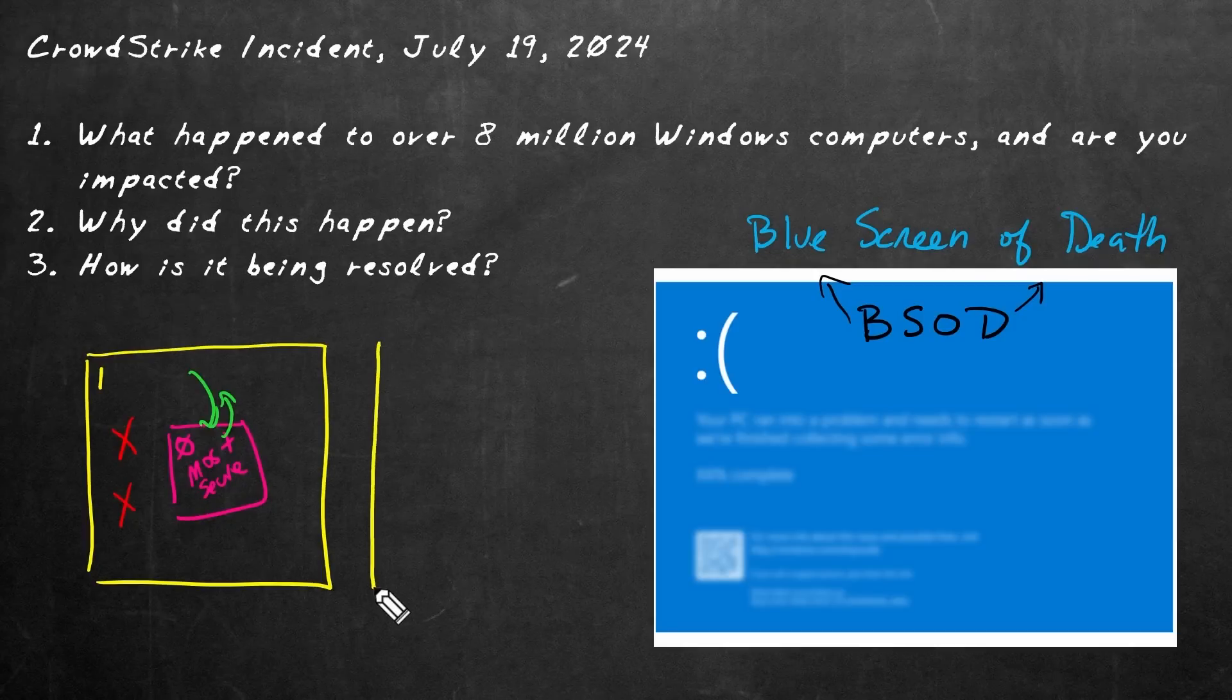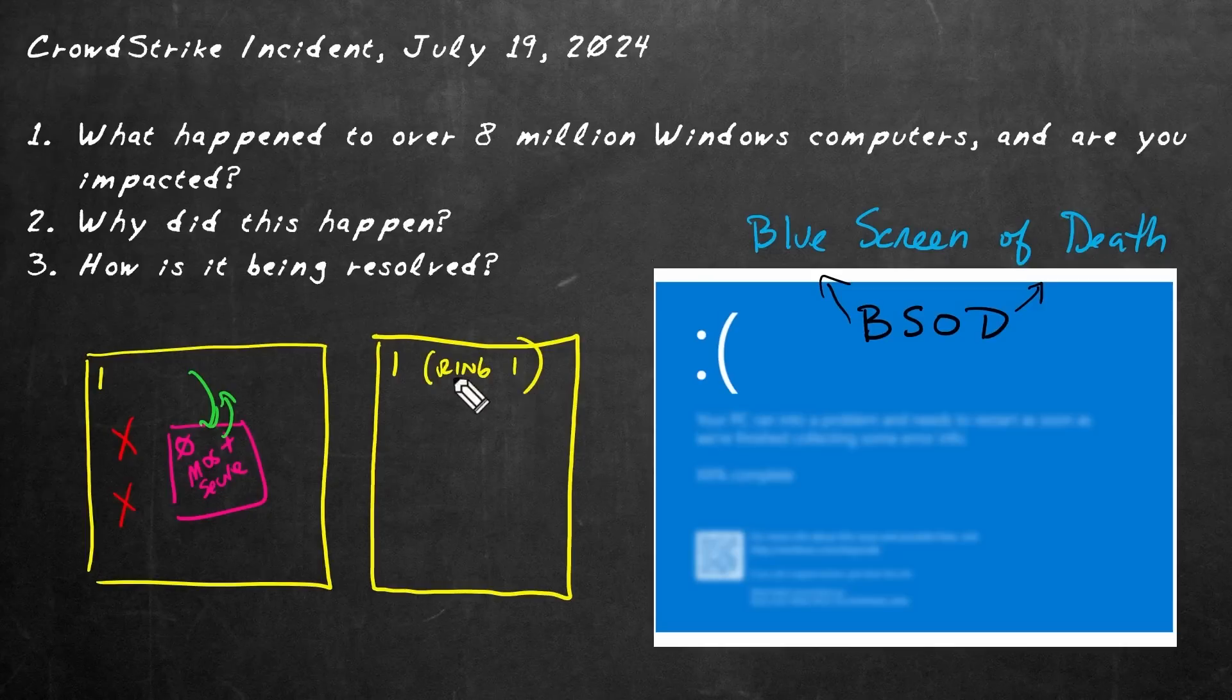So how does this story of the castle apply to why this blue screen of death happened? I'm going to draw the same diagram again, except this time I'm going to call this ring one. Think of it like area one for the castle, the outside perimeter, but a computer system is referred to as ring one. And then the operating system and most critical functions are going to be running in a separate and more secure area called ring zero.